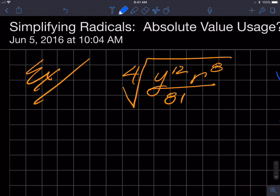Hello, hopefully this is helpful for you. When we're simplifying radicals, sometimes the answer has an absolute value and sometimes it doesn't. Why is that?